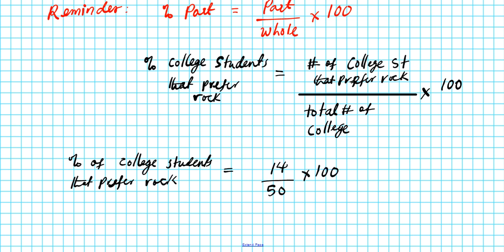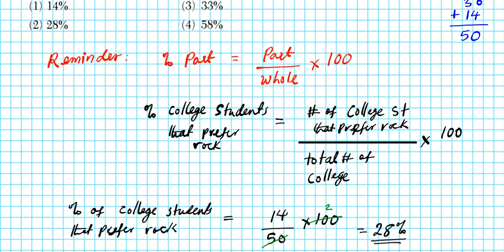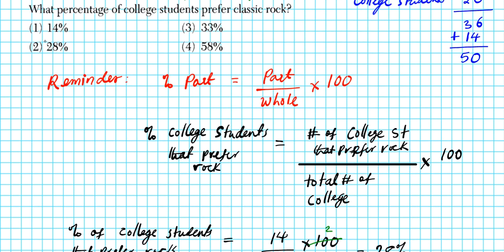50 goes into 100 twice, and 14 times 2 is 28. So 28 percent of college students prefer classic rock. The answer to question 5 is option number 2.